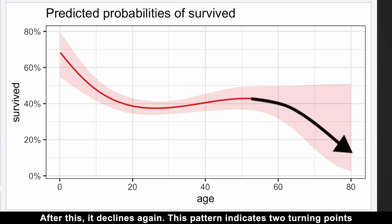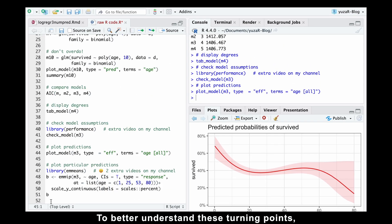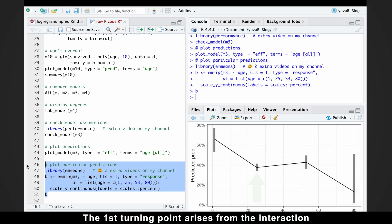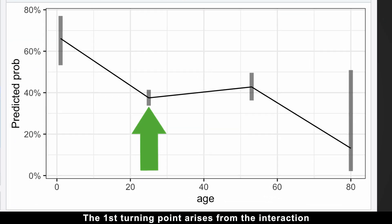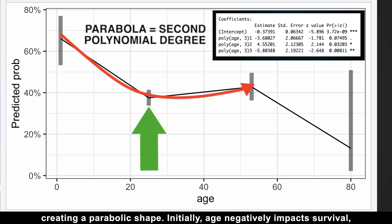The plot clearly shows that babies and young children have the highest survival rates. Survival probability then decreases until around age 25, before gradually increasing to a peak at approximately 53 years old. After this, it declines again. This pattern indicates two turning points and essentially divides the data into three distinct areas. To better understand these turning points, we can visualize specific ages by treating age as a categorical variable.